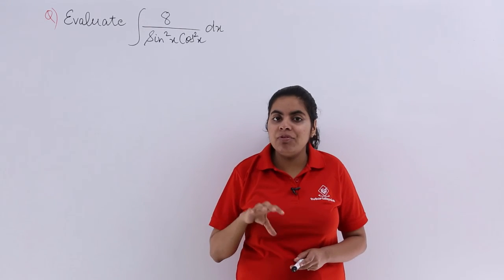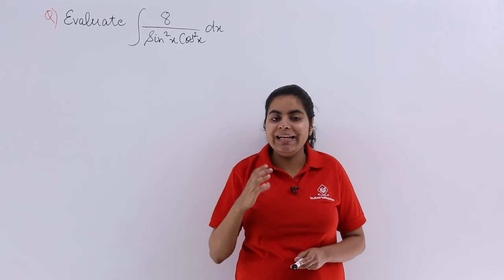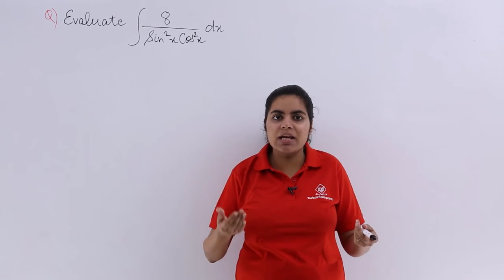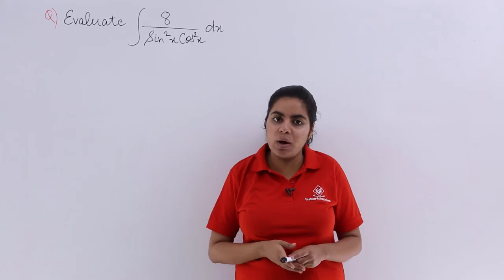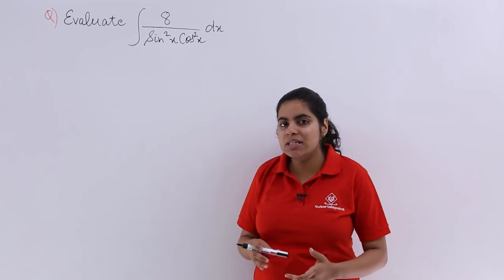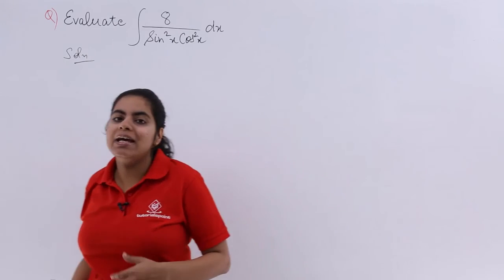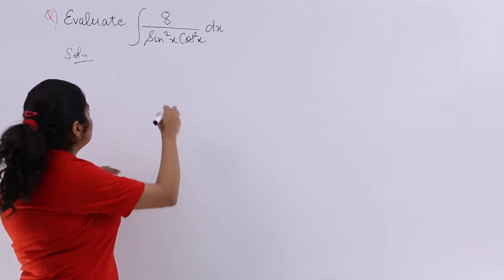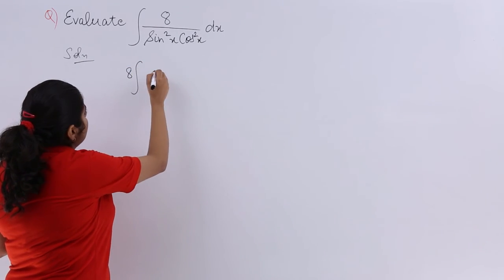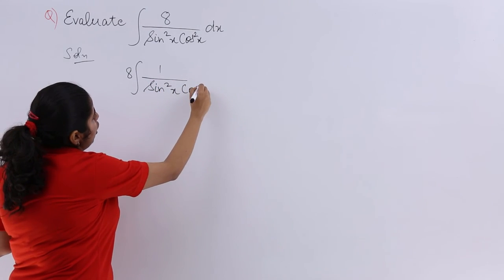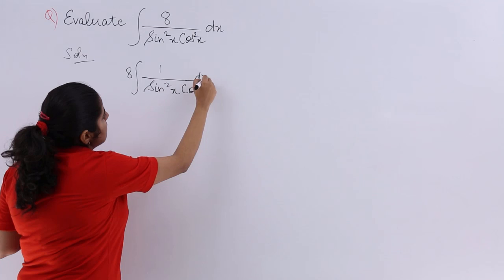But can we quote 1 in terms of sin or cos something? Yes, sin square x plus cos square x is equal to 1. So we will be using that concept and let's see does it work or not. I write solution and I start with the solution. Here I have 8 common, it becomes 1 upon sin square x cos square x and dx does not change.